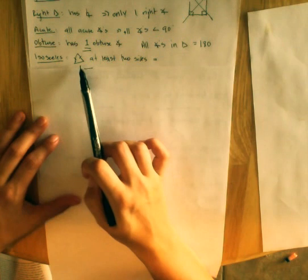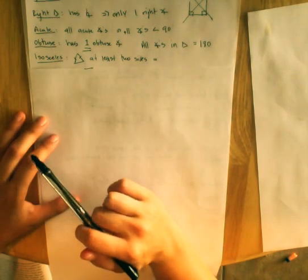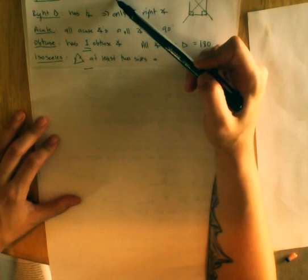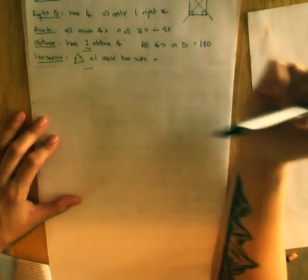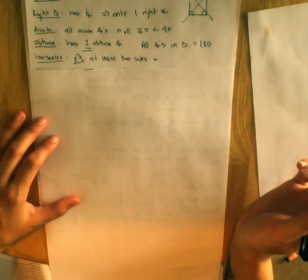Isosceles triangles, we draw it like this, has at least two sides are equal, meaning an equilateral triangle is also an isosceles triangle. But an isosceles triangle is not necessarily equilateral.